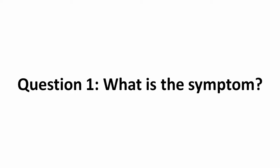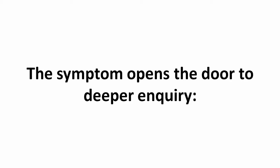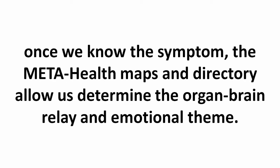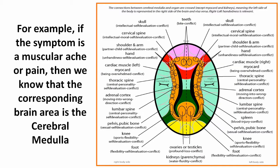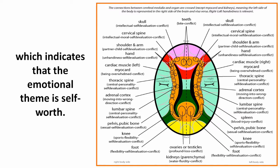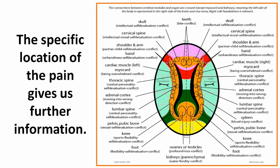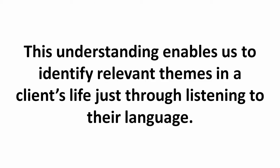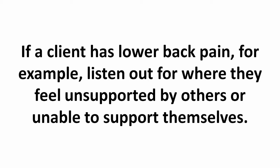Question 1 is: what is the symptom? The symptom opens the door to the deeper inquiry. Once we know the symptom, the MetaHealth maps and directory allow us to determine the organ-brain relay and then the emotional theme. For example, if the symptom is a muscular ache or pain, then we know the corresponding brain area is the cerebral medulla, which indicates that the emotional theme is self-worth. The specific location of the pain gives us even further information, enabling us to identify relevant themes in a client's life just through listening to their language.